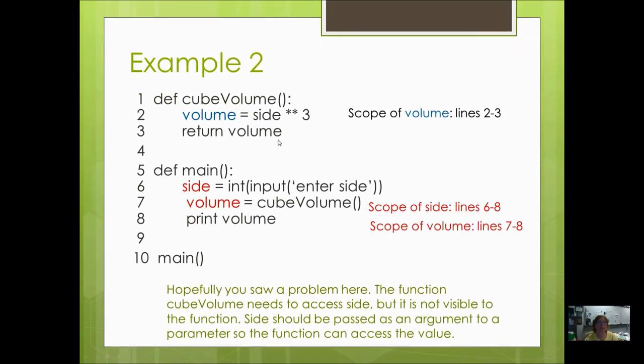Example 2. I've got a return function here. It has no parameters. It does have a local variable volume. The scope of volume is lines 2 and 3, and that's it. Here we have a main function with side. Its scope is 6 to 8, and volume lines 7 to 8.